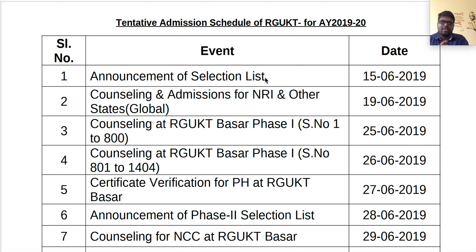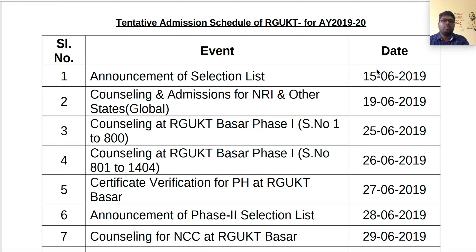This is the general selection list — general means other than global category seats and NRI seats. Counseling and admission for NRI and other states is on 19-06-2019. Once you see the selection list on the website, you can get your information through email or SMS.